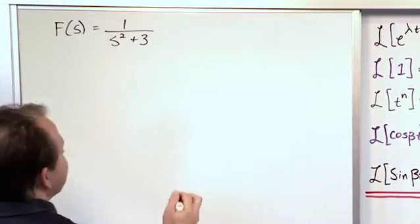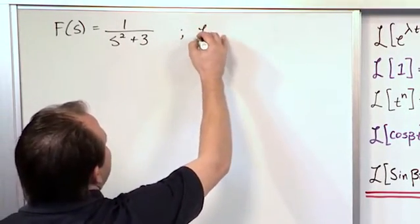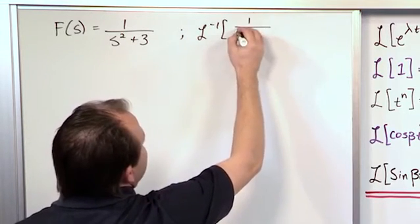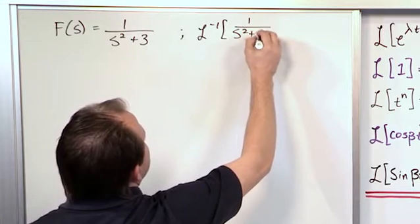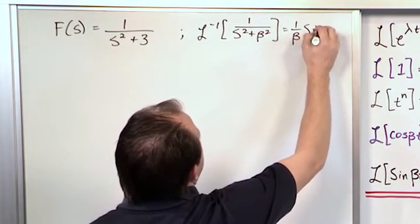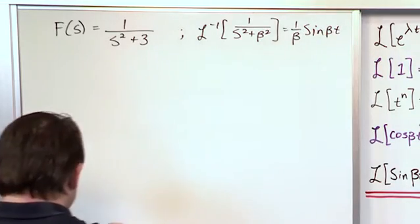So let's just write that down. What we're going to use, I'll just write it down so you have it in front of you. Laplace transform inverse of 1 over s squared plus beta squared. And we just say that's 1 over beta sine beta t.